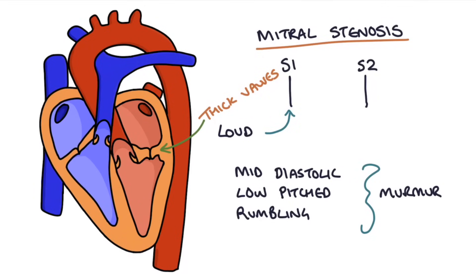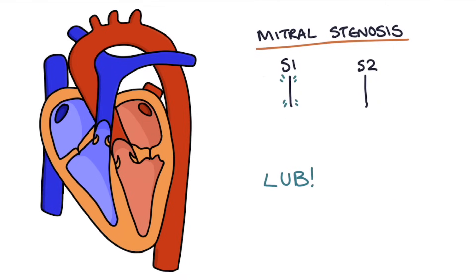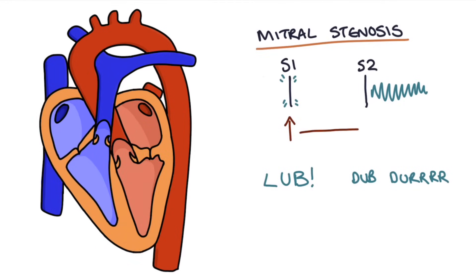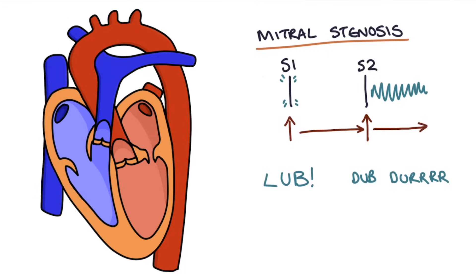You also get a loud S1 due to the thick valves that require a large systolic force to shut. Once the systolic force reaches a certain threshold, the valve shuts very suddenly. So what you end up with is this loud lub and then a dub dur. Let's have a listen to it. Did you catch that loud first heart sound and then that second heart sound followed by that rumbling murmur? Let's have one more listen.